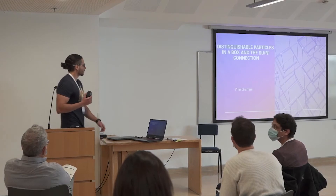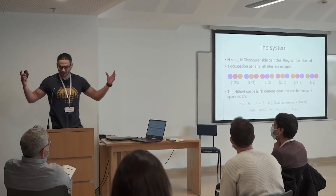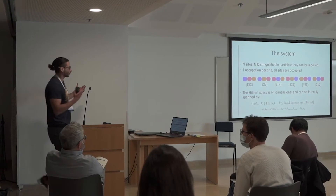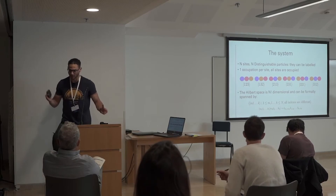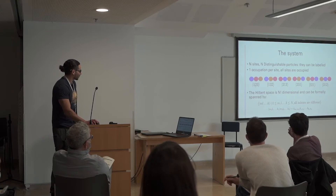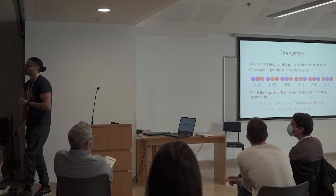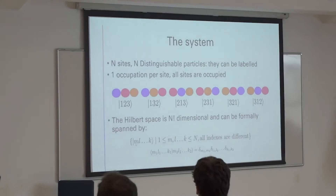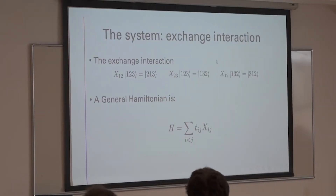I will talk about the central particles in a box and the SU(N) connection. Let me first define the system: we have N sites and N particles, which can be labeled from 1 to 2N. All sites are occupied by a particle, and all sites are occupied by different particles, so this state basically says that site 1 has particle 1, site 2 has particle 2, etc. The Hilbert space is N-factorial dimensional and can be formally spanned by states of this sort, where each index is a number between 1 and N and all numbers are different.